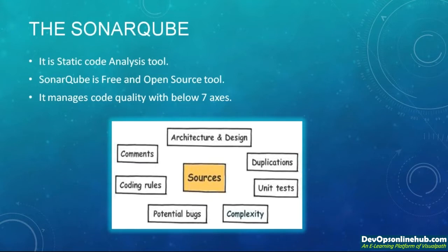SonarQube is a static code analysis tool which is free and open source. It is totally free, and due to that it is famous in mostly all organizations. We can call it a static code analysis tool which calculates or measures your static code, analyzes it, and displays the records or metrics on the dashboard.